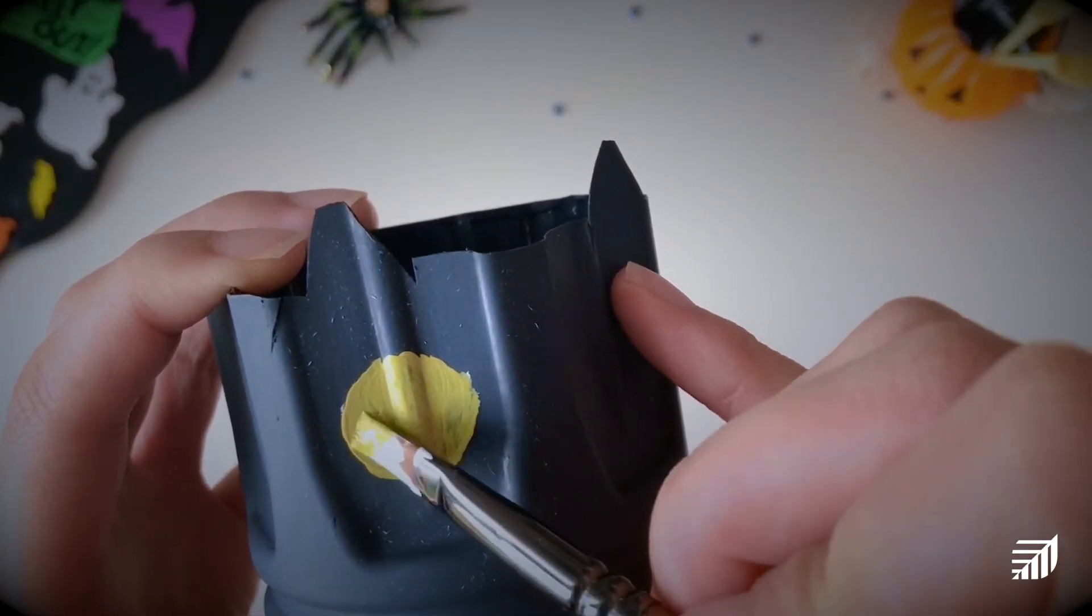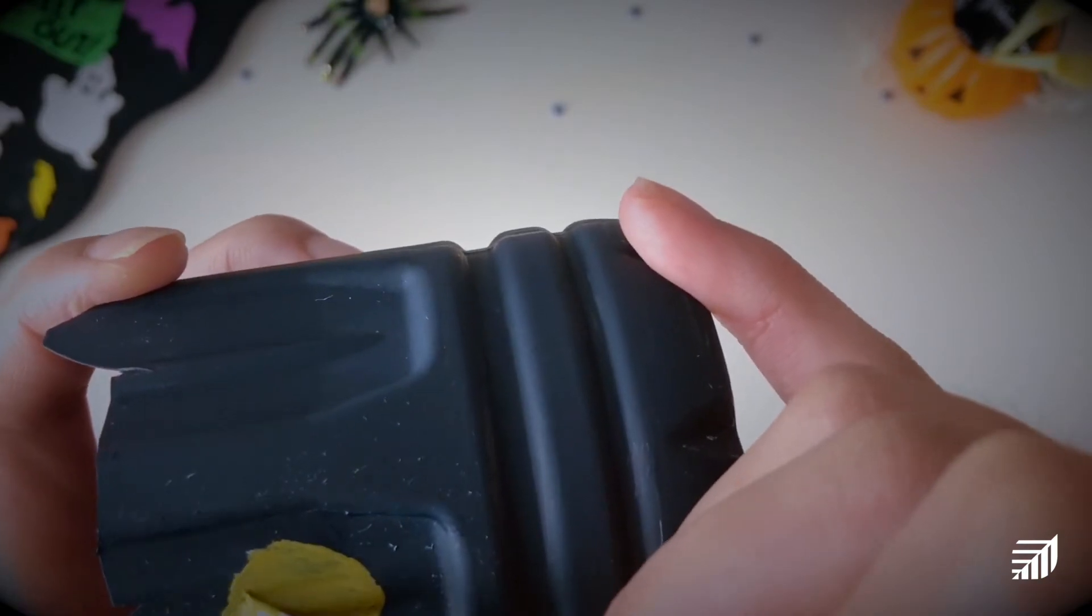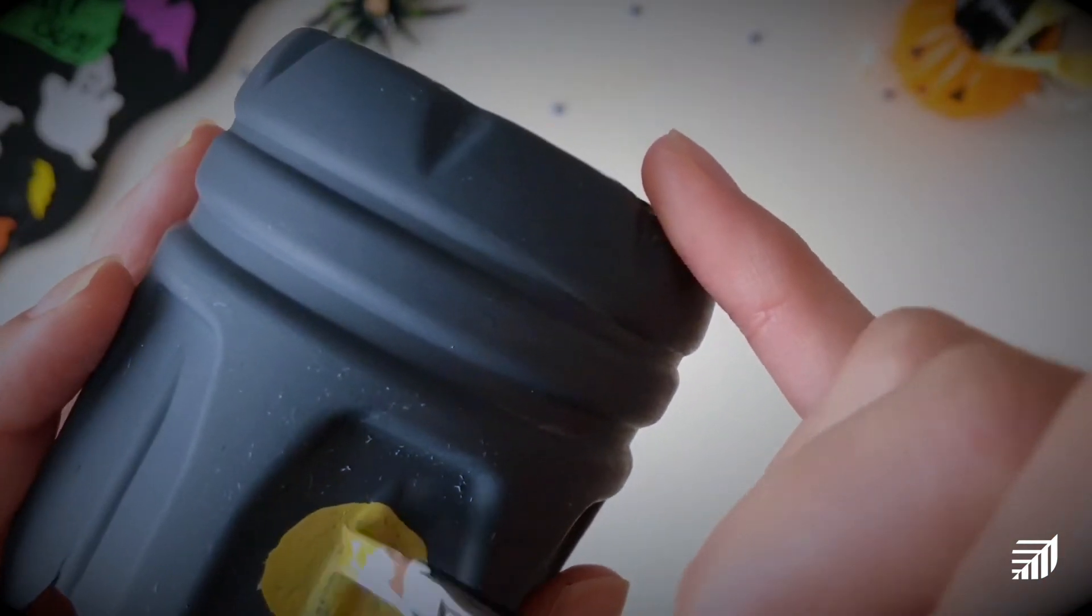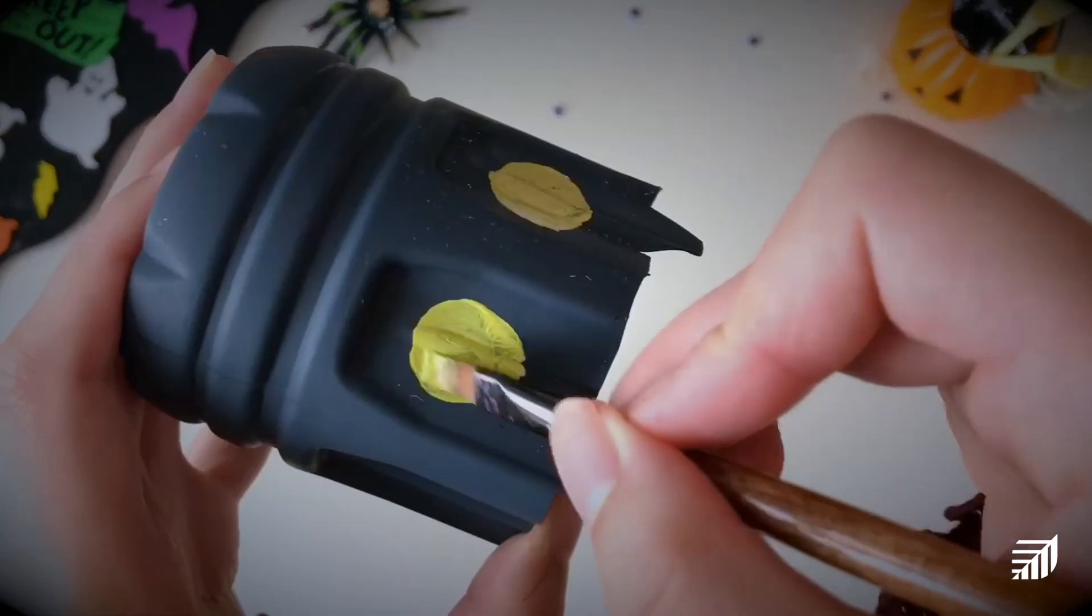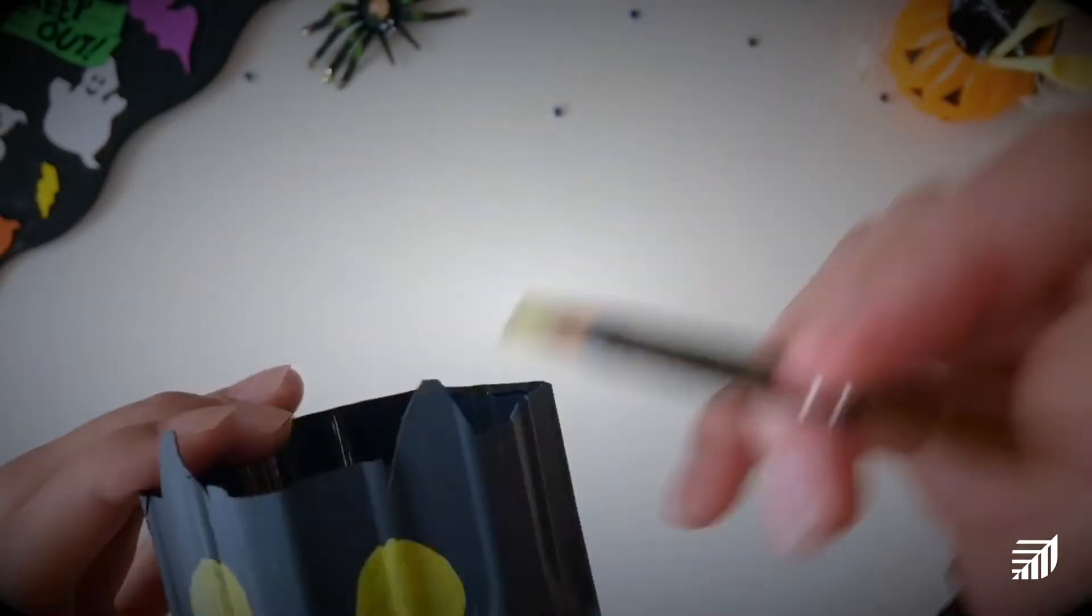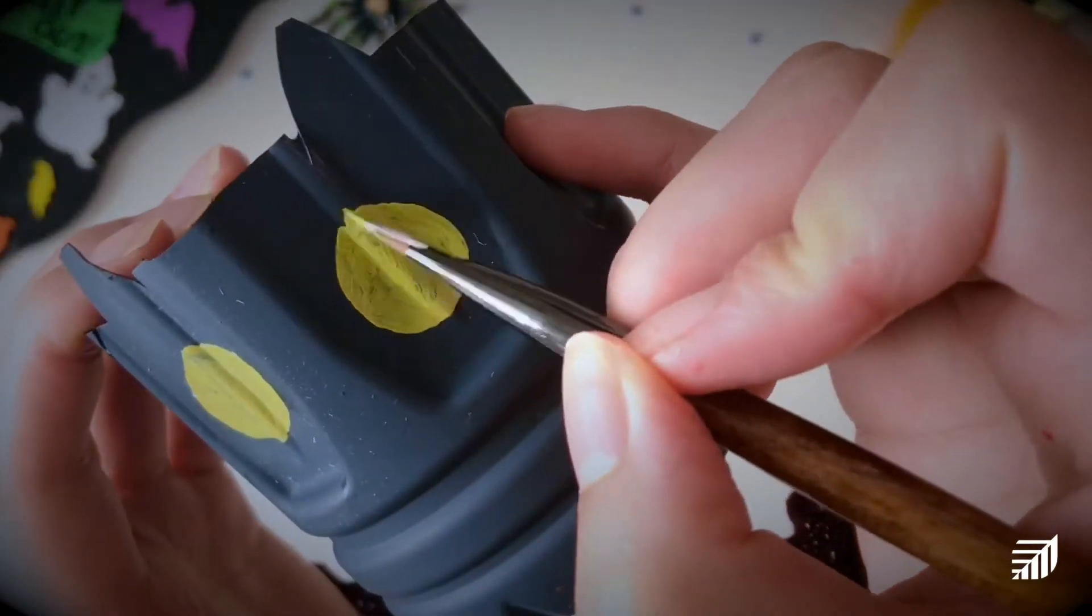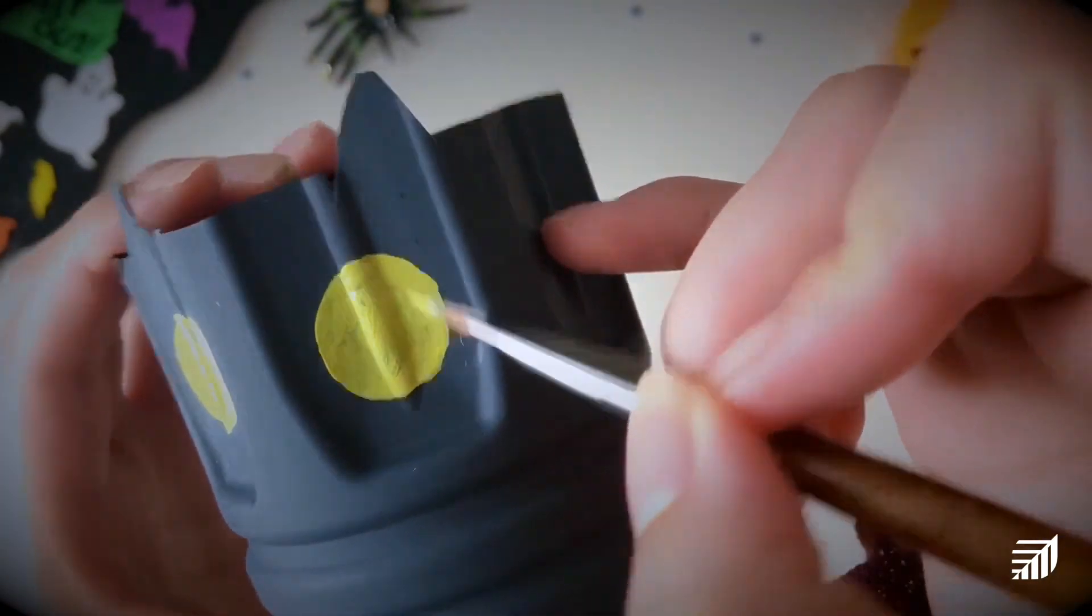Once the black paint is dried, we can start working on the cat's face. I have some green paint here that I'm going to use for the cat's eyes. Another option if you're finding it difficult to paint on the ridges of the water bottle is to use construction paper to cut out the shapes for the face.